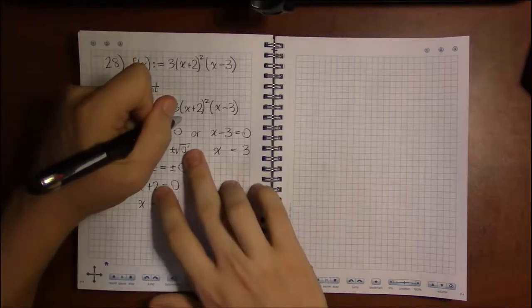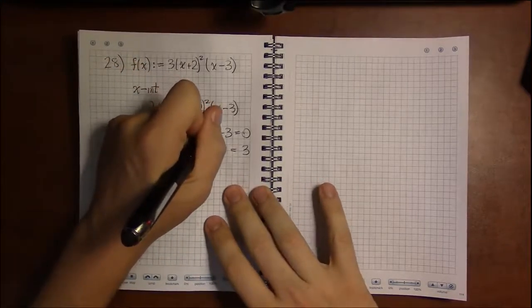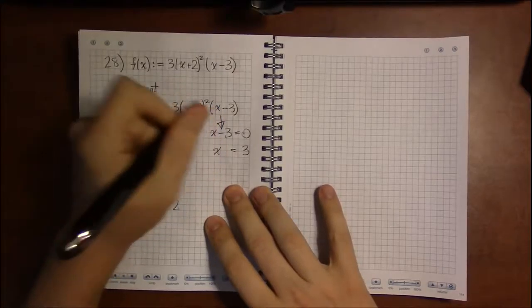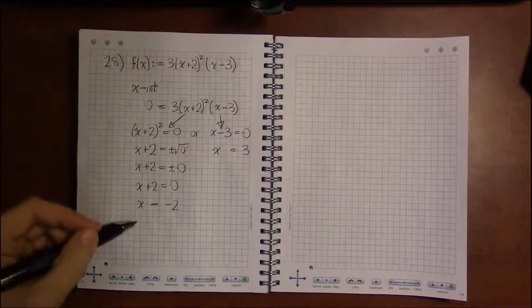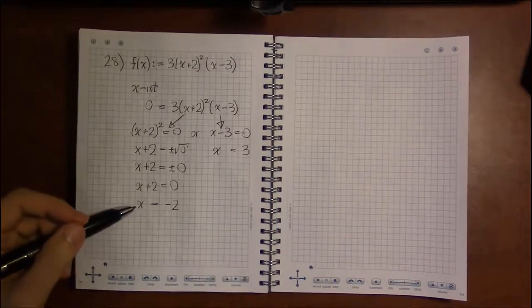And our second x-intercept is a lot simpler: this is just x = 3. So see how each factor ended up giving us an equation to solve and ended up giving us an x-intercept.